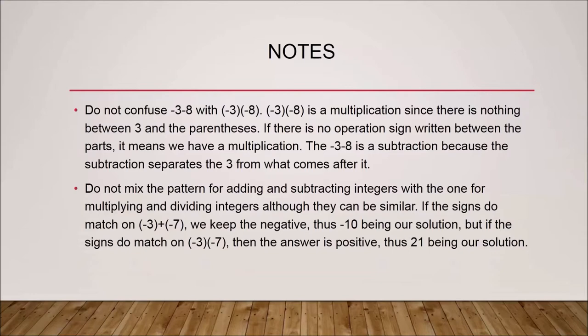Tip two: adding and subtracting integers should not be confused with multiplying and dividing integers, although they can have some similarities. For example, in an addition case: minus three plus minus seven — same signs — we add three and seven to get ten and put the negative sign, giving negative ten. In the multiplication case: minus three multiplied by minus seven — also same signs — but here we apply the rule that matching signs give a positive answer, so the final answer is positive twenty-one.